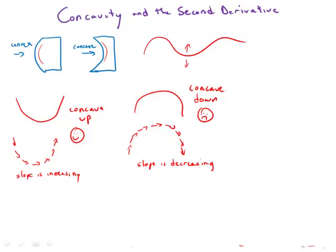And so concavity really tells us not just about an individual slope, but about a change in slope. You could almost call it a rate of change of slope.